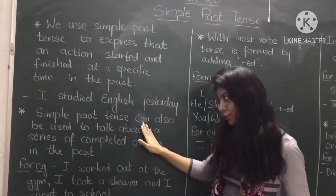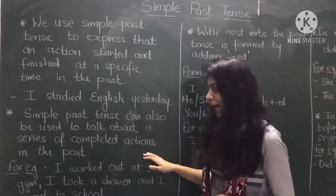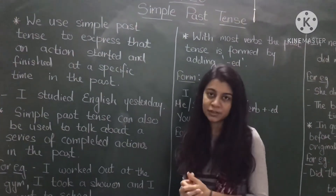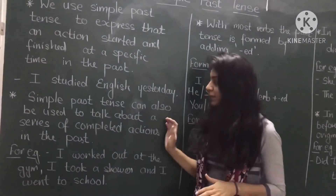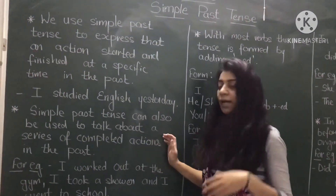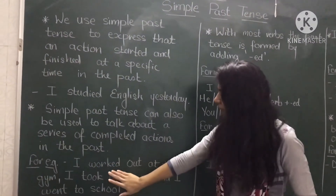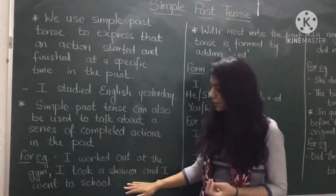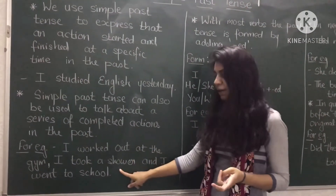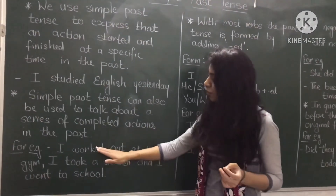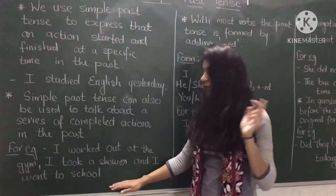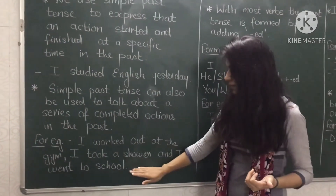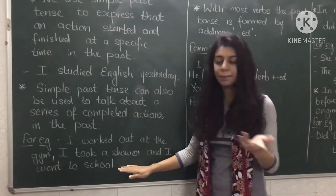Simple past tense can also be used to talk about a series of completed actions in the past. If you want to express any series of actions that happened, you can also use simple past tense. For example: 'I worked out at the gym, I took a shower, and I went to the school.' Here there are three actions — working out is first, taking a shower is second, and going to school is third. All three are a series of actions that happened in the past, expressed using simple past tense.